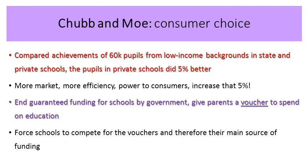Chubb and Moe compared the achievements of 60,000 pupils from low-income backgrounds in state and private schools and found that pupils in private schools did 5% better. Therefore, more market, more efficiency, and more power to consumers would increase that 5%. What they argue should happen is to end guaranteed funding for schools by government and instead give parents a voucher to spend on education — the equivalent of the annual cost of educating a child — so that every year a parent could decide where to send their child, almost creating a market-style system within the state education sector. This would force schools to compete for the vouchers and therefore their main source of funding.